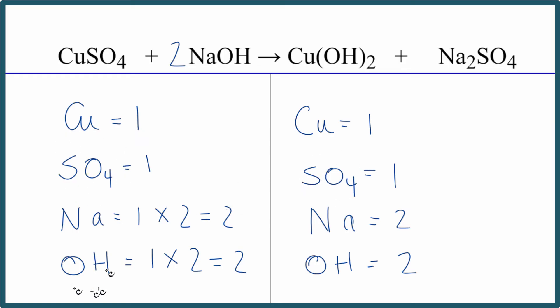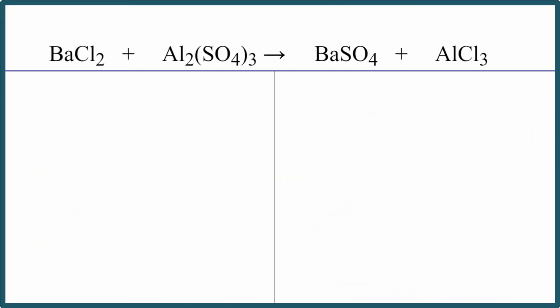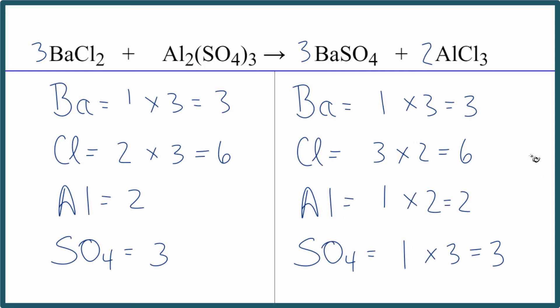The trick with polyatomic ions is to count them as one item as long as they appear on both sides of the equation — this makes balancing much tidier. Pause and give the next one a try. It's a bit more challenging but the same idea — there's a link in the description and a card if you want to watch a full video on how to balance it.